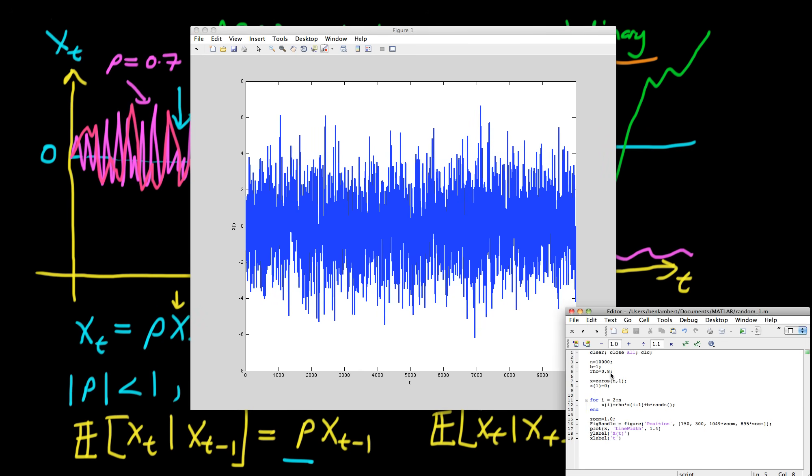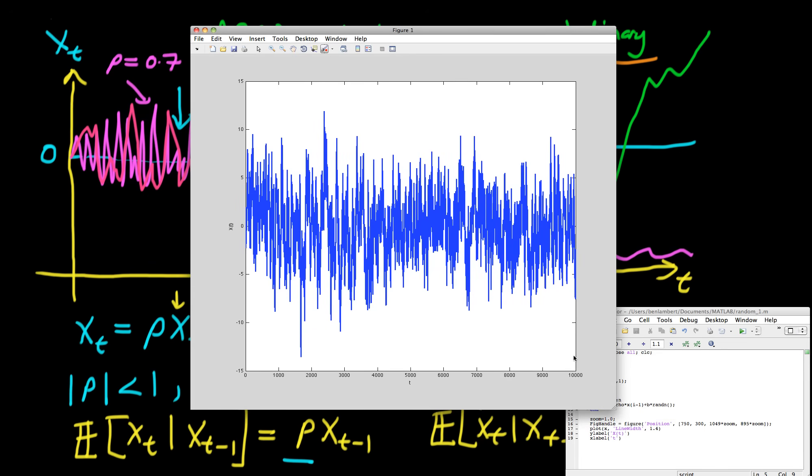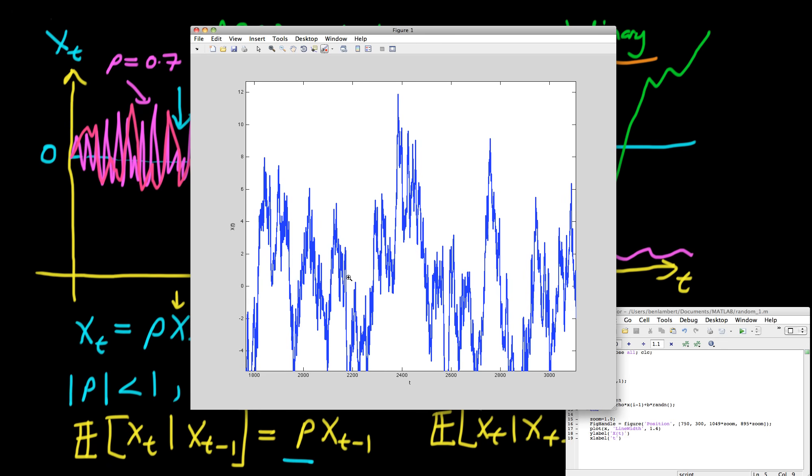Let's now increase ρ a little bit, so let's increase ρ to 0.95. If we do so you can see now that we're not crossing 0 half as frequently as we were before, and actually if we zoom into the series here we can start to see quite quickly that we're getting these long runs of positive and negative values of Xt.